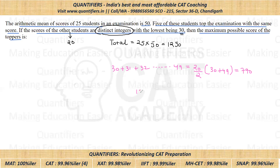So the total sum of all 25 students is 25 times 55, which is 1250. The remaining sum for the 5 toppers is 1250 minus 790, which comes out to be 460. Dividing 460 by 5 gives us 92. That means the five toppers each scored 92.